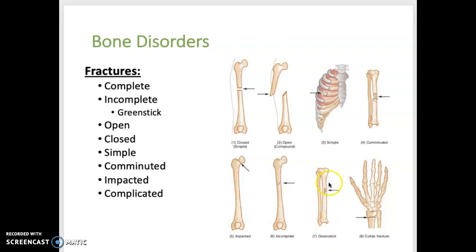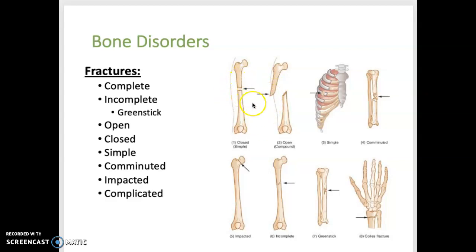Here's a greenstick fracture — we can see it's only fractured on one side. An open or compound fracture penetrates through the skin, as shown here. A closed fracture, like shown here, has not penetrated the skin.